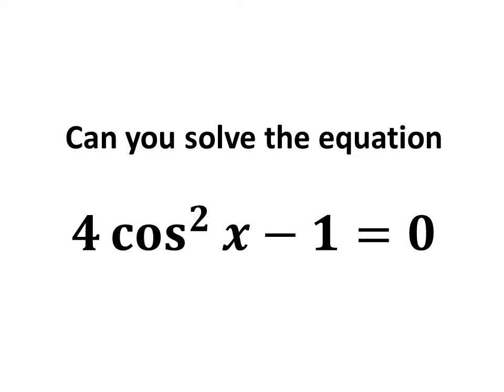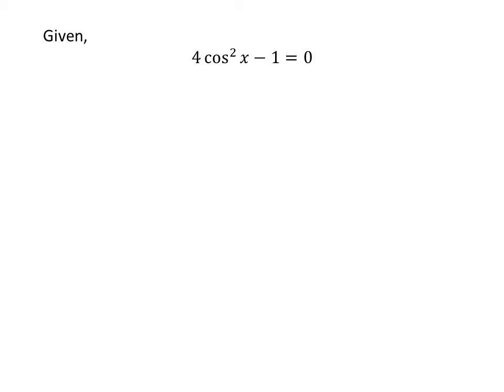In this video, we will learn to solve the equation 4 times square of cosine of x minus 1 is equal to 0. Given to us: 4 times square of cosine of x minus 1 is equal to 0.